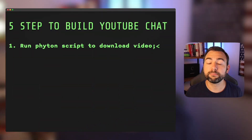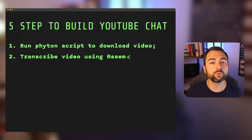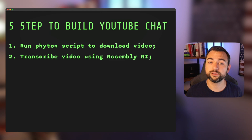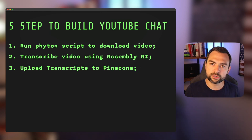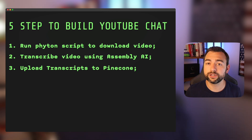Here's an overview of the five different steps we need to take to create an AI version of our favorite YouTuber. First, we're going to run some Python scripts to download all the videos. Second, we're going to transcribe all these videos by sending them over to Assembly AI. Third, we're going to take back all of our transcriptions and send them over to our Pinecone database so we can access them later.